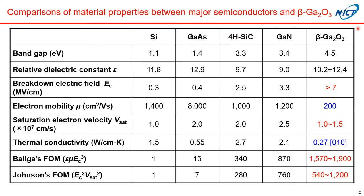What I'm showing here is a comparison of material properties between major semiconductors and beta-gallium oxide. As I mentioned, beta-gallium oxide has a large bandgap energy of 4.5 eV. If you look at the dielectric constant, it's 10 to 12, which is almost the same as those of other semiconductors. The breakdown electric field is one of the most appealing points for gallium oxide — it's at least over 7 MV/cm, which is larger than those of silicon carbide and gallium nitride.